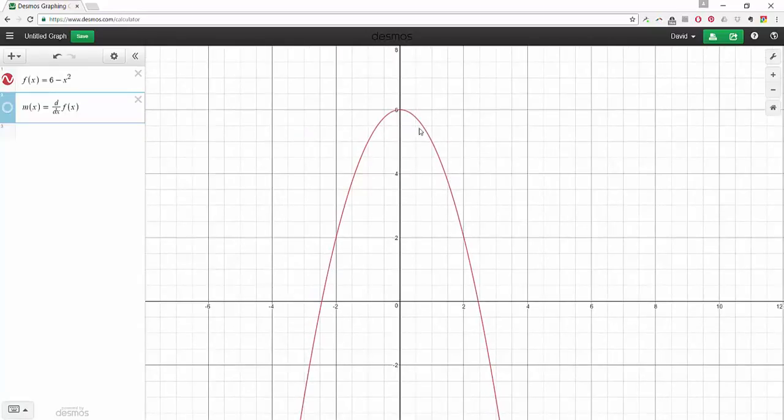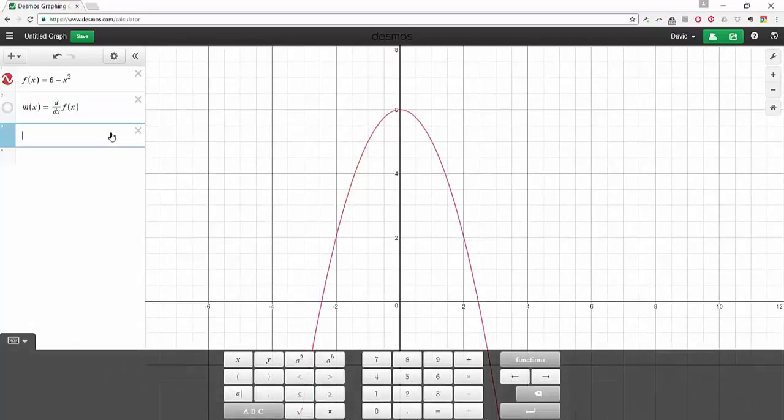Instead, I want to construct a tangent line at a point w. So let's create a slider for w. So there's w equals 1. And now what's the tangent line? So I said the tangent line was y minus some y value equals the slope somewhere times x minus an x value. So we just got to fill all those bits in.